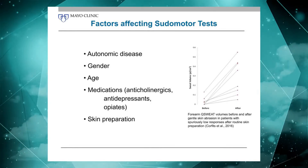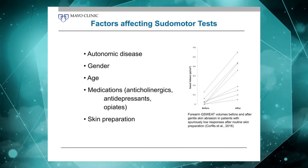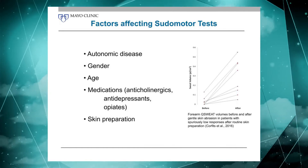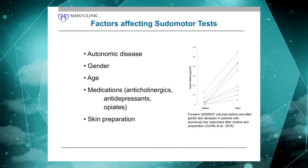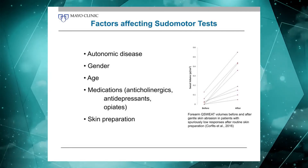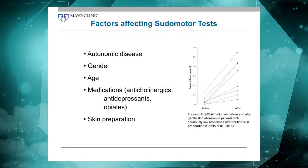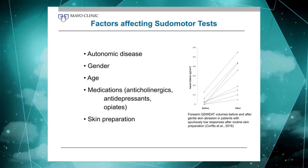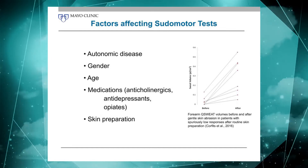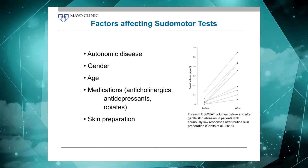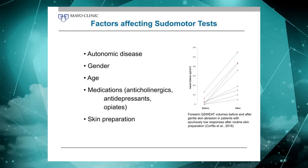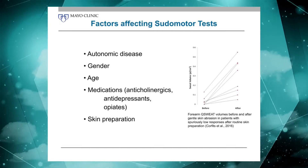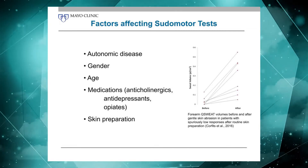Gender plays a big role in pseudomotor responses. Responses from women are, on average, markedly lower than the responses we get from men. Age is not as big of a factor — there's a wide age range between 15 and 75 where there's really no significant change occurring. It's just the very young and the very old where there's a drop-off.